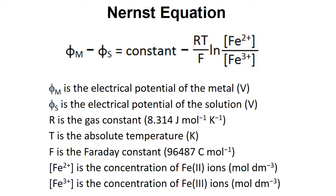Phi M, the electrical potential of the metal wire, minus phi S, the electrical potential of the solution phase, equals a constant minus RT over F natural log of the Fe2+ concentration divided by the Fe3+ concentration.